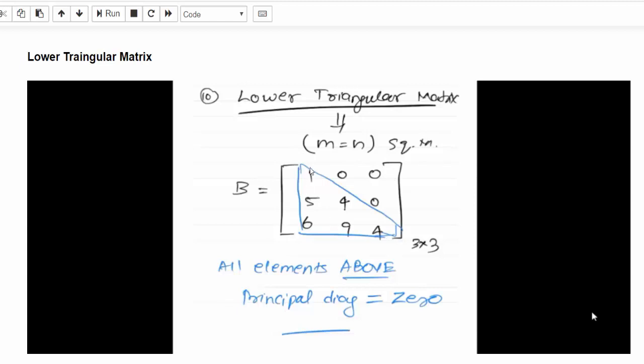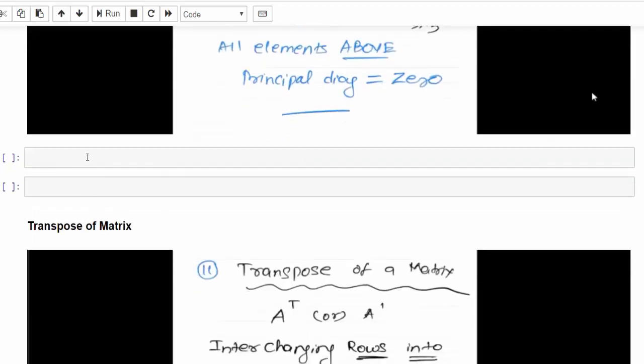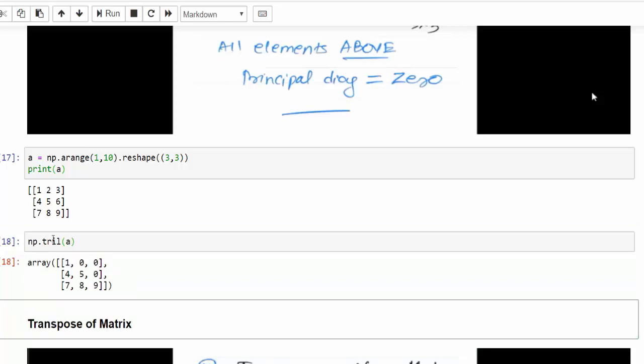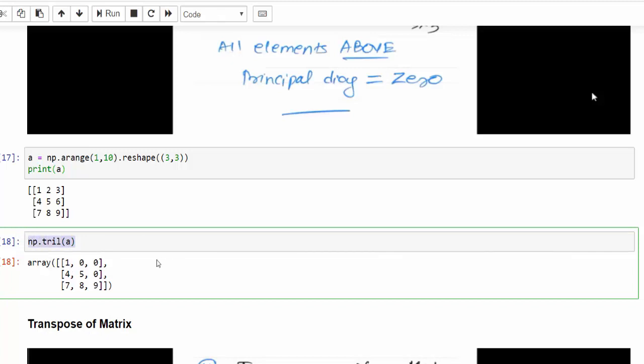Lower triangular matrix. Lower triangular matrix means above the principal diagonals are zero. Same code to create a 3x3 matrix. Here, can you guess what will be the keyword? Triangle, it is for lower. So it is L. Pass the matrix, execute. So we've able to create the lower triangular matrix.